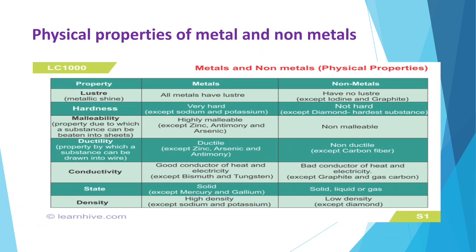Physical state: metals are solid except for a few — that is mercury and gallium. Non-metals may be solid, liquid, or gas. Density: metals are highly dense, meaning atoms are compactly arranged, except sodium and potassium. Non-metals show low density except diamond. That is why many of them are in gaseous or liquid form.